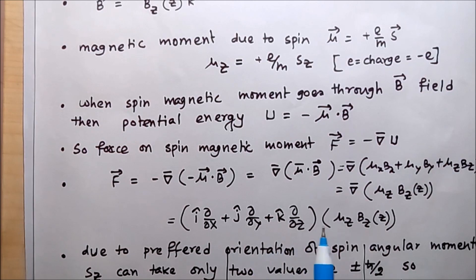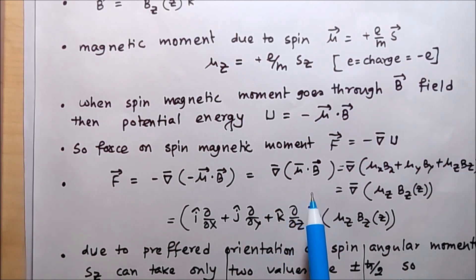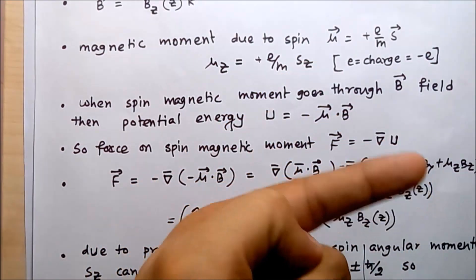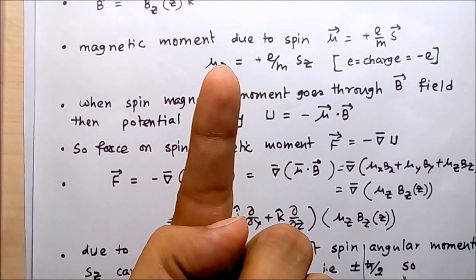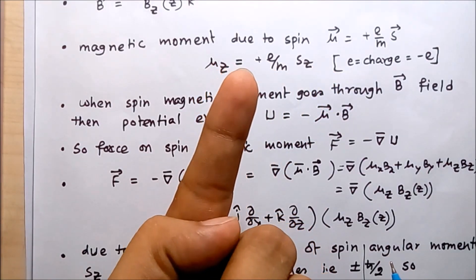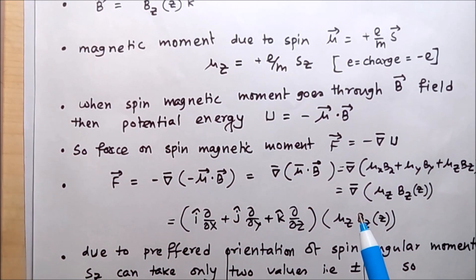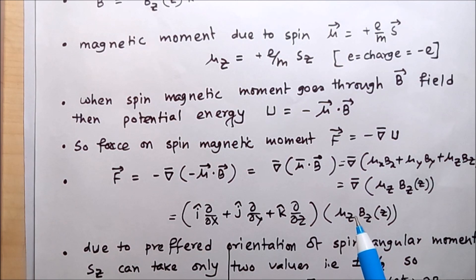Now in classical mechanics, a spinning ball spinning around a particular axis can orient itself in any direction. It can orient itself in this way or this way or any direction. But according to the quantum mechanical theory of spin, the electron can orient itself only in two directions, either up or down.